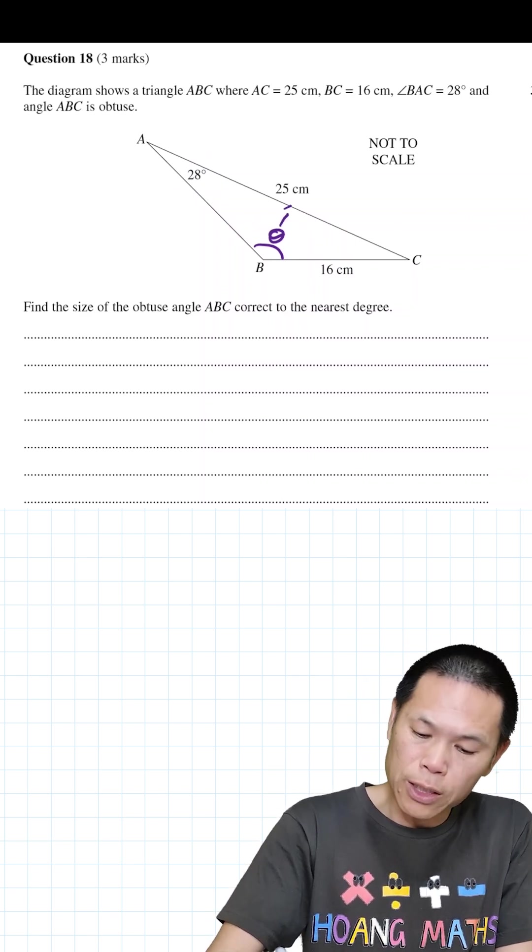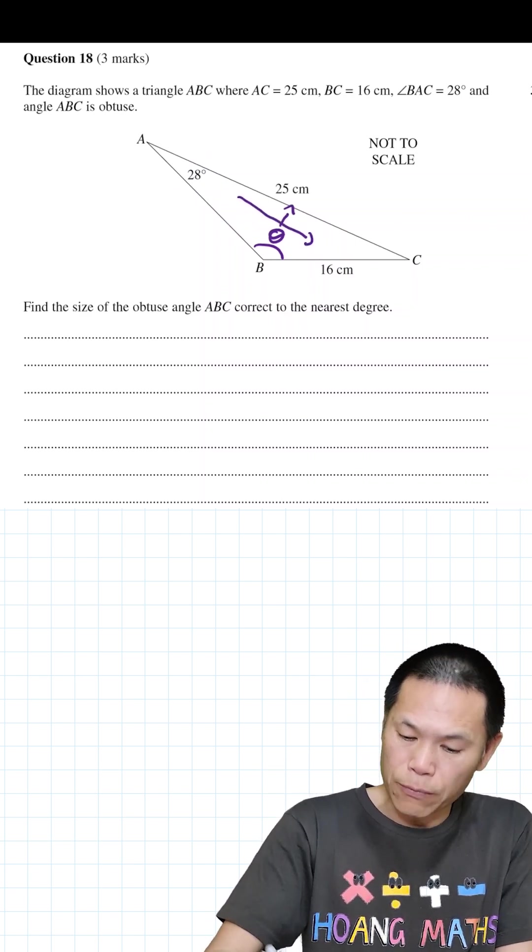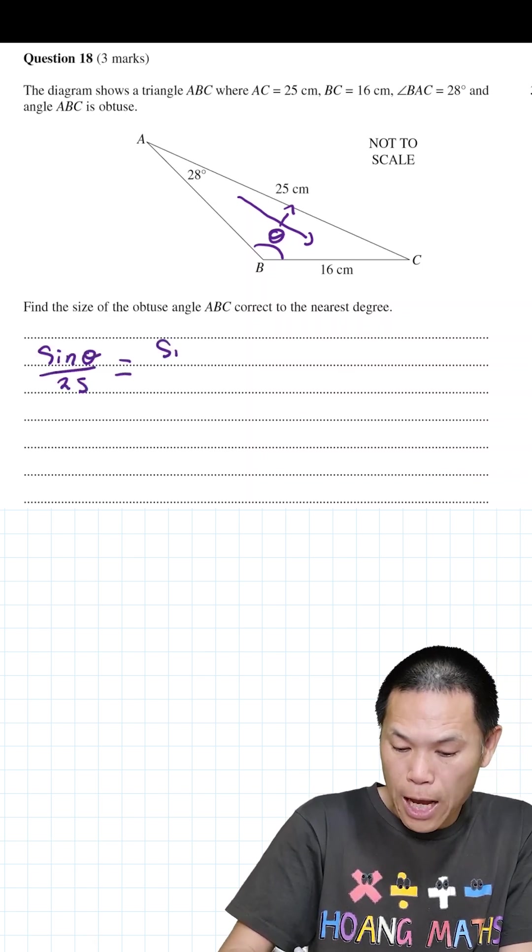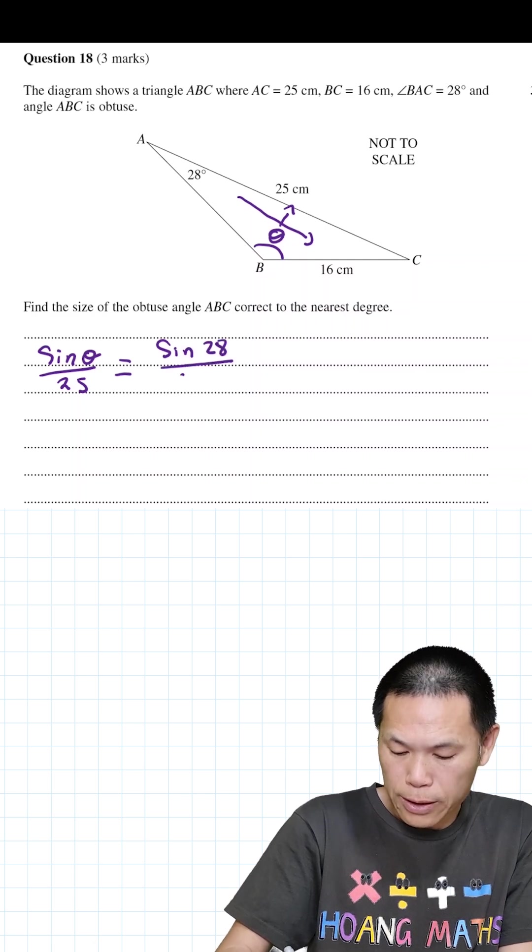Sine rule: opposite of this and we use opposite of that. So that means sine theta over 25 equals sine 28 over 16.